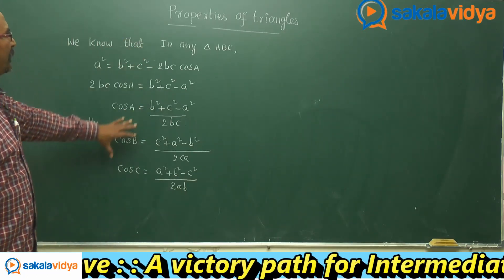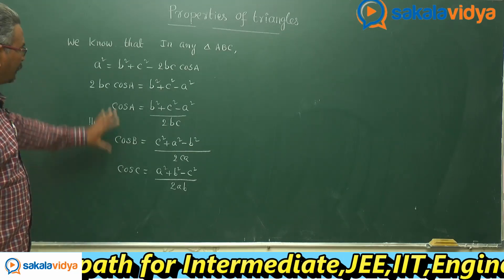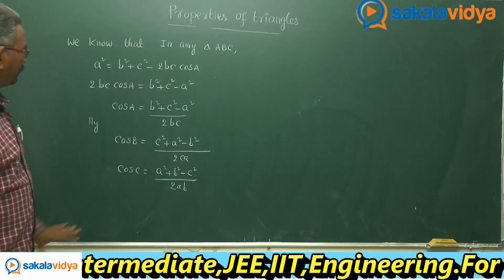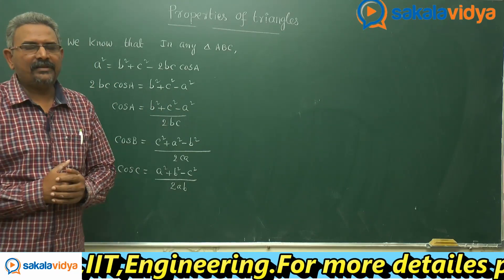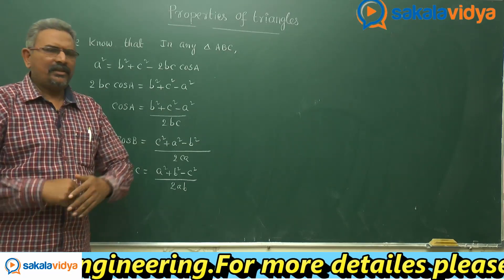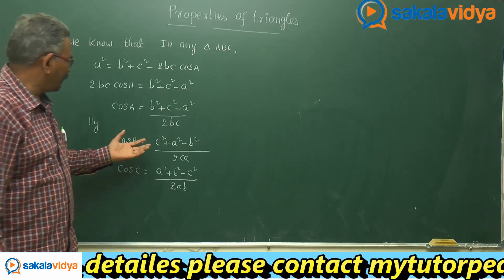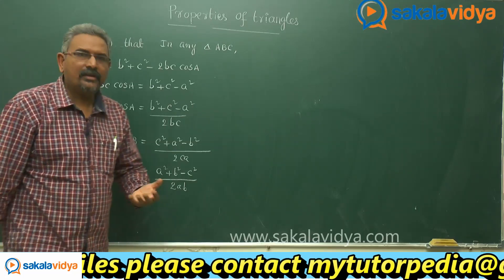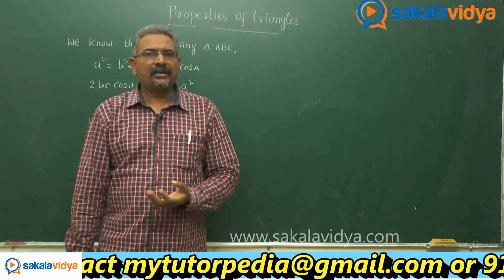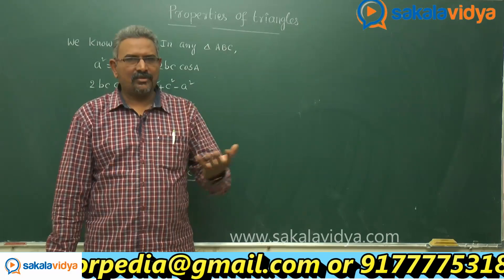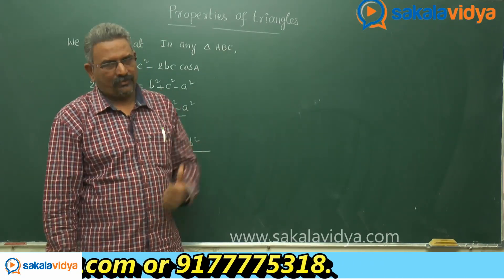So we can deduce these formulas from the cosine rule. With the help of the cosine rule, the angles of a triangle can be evaluated even though the triangle is not a right-angle triangle. We can also find out the greatest angle and the least angle in the triangle using the cosine rule.